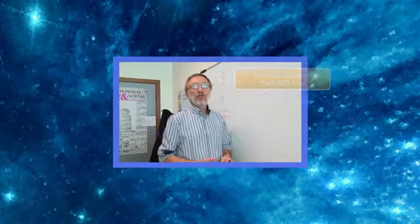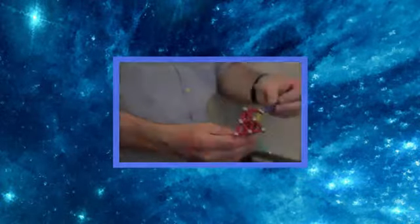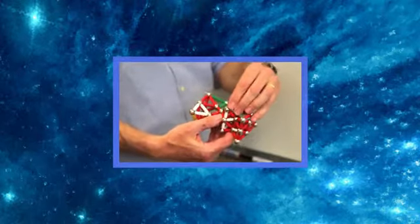Secondo la congettura dell'universo computazionale, la struttura ultima, la stoffa ultima del nostro cosmo sarebbe discreta. Abbiamo un esempio di struttura discreta qui in cui abbiamo delle palline di metallo che rappresentano luoghi dello spazio e interconnessioni, sono questi segmenti colorati gialli.